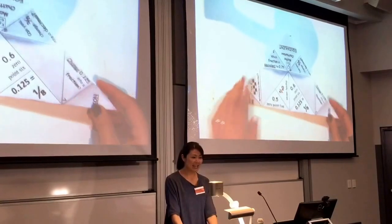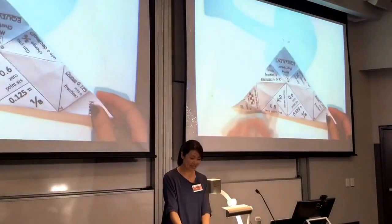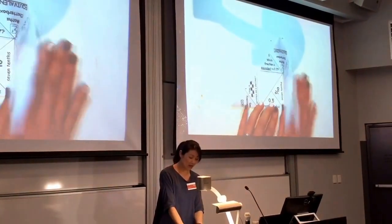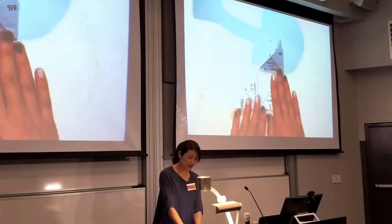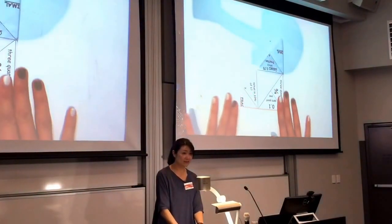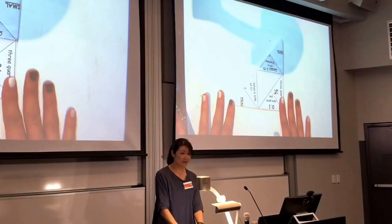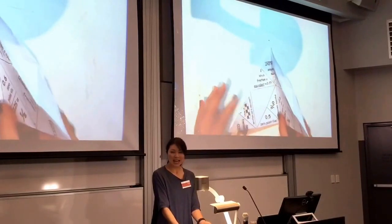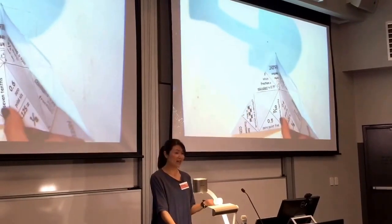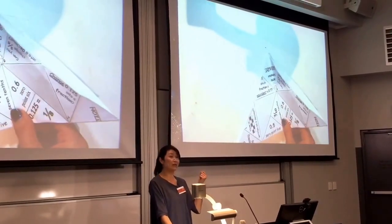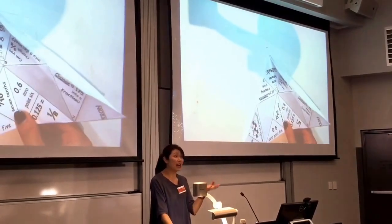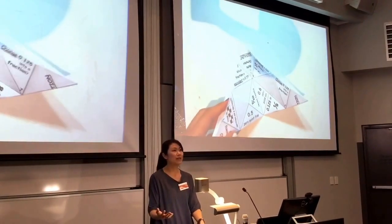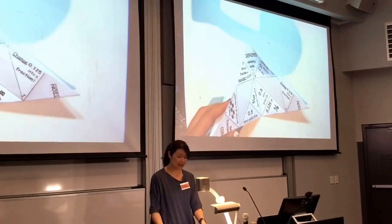The second step is to fold it again, making a triangle corner to corner like this. So it's half of the half, and you can ask questions like, what is half of the half? Or you can simply ask, what is a quarter in percentage or decimal?